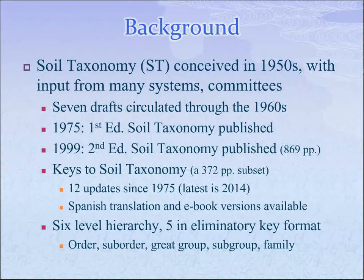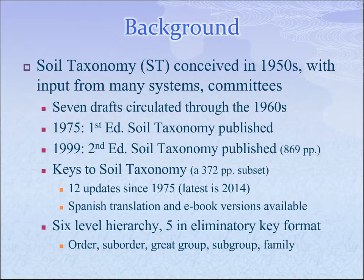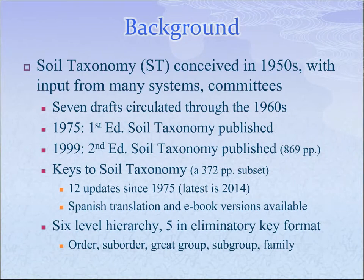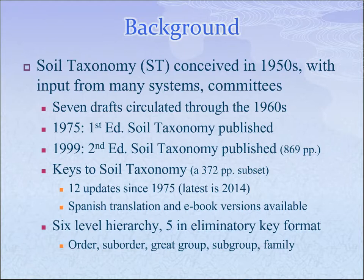A little bit of background: many of you who have studied soil taxonomy know it was first conceived back in the 1950s as a classification system to organize our knowledge about soils. The seventh approximation was issued in the 1960s. In 1975, the first edition was published, and in 1999, the second edition was published. The first edition is about two inches thick; the second edition is four inches thick and has fewer photos but more taxa and criteria regarding soil classification.